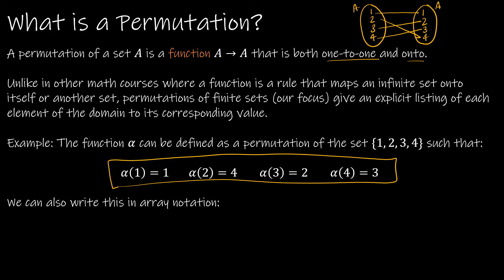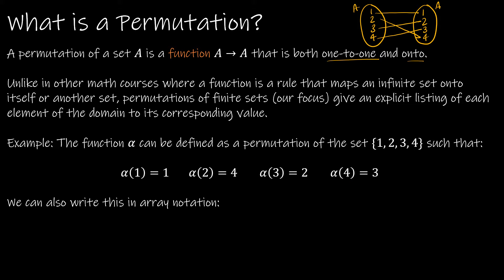When we're talking about a permutation, what's important to understand is that it is a function — the same way that we talk about functions in algebra or in calculus. It's a function that is both one-to-one and onto. In other math courses we'd have something like f(x) = x + 2, and a function is some rule that maps from an infinite set to another set. Permutations of finite sets don't give us a rule — they basically just give us an explicit listing of each element of the domain and its corresponding value.